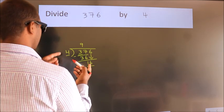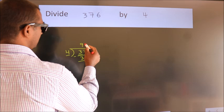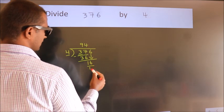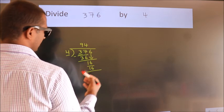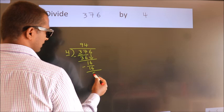When do we get 16 in the 4 table? 4 times 4 is 16. Now, we subtract. We get 0.